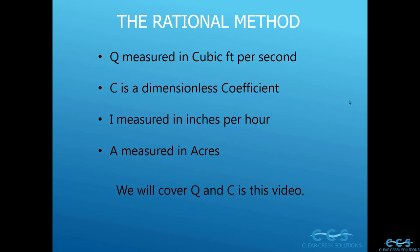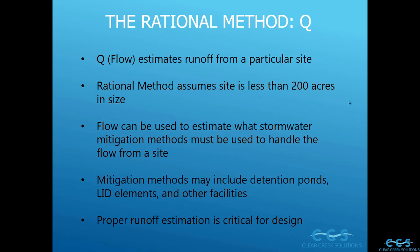Q estimates the runoff from a particular site. The rational method makes some assumptions — one is that your site is less than 200 acres in size. Once we get above 200 acres, the equation kind of breaks down. Over 200 acres is quite large when talking about runoff, but other methods such as continuous simulation can handle that pretty easily.